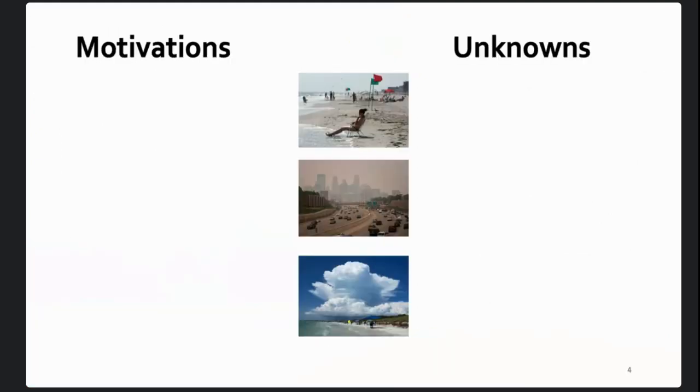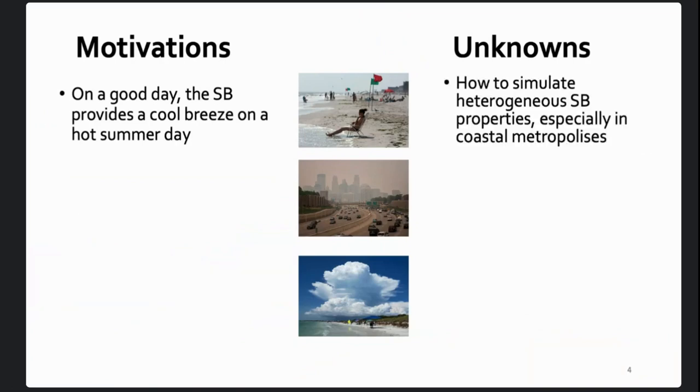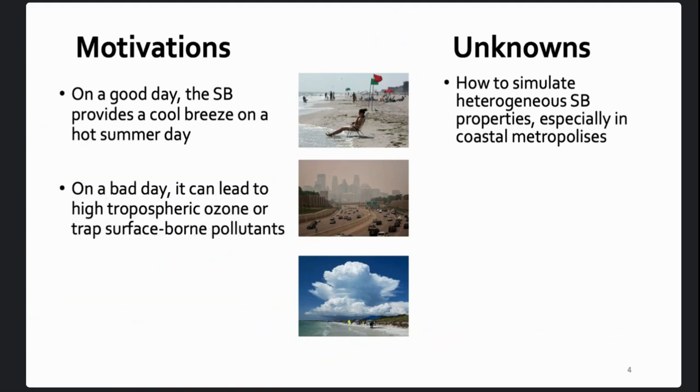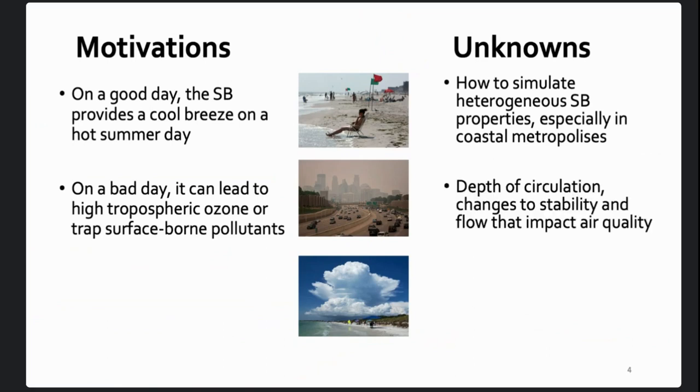So why do we care about the boundary layer? On a good day, it is really nice. It brings a nice cool breeze to a hot summer day. But how that actually impacts human comfort in coastal metropolises is not fully understood. Sometimes it can bring a lot of moisture, but not a lot of cooling, which can in turn raise the heat risk. On a bad day, it can lead to high tropospheric ozone and trapped surface-based pollutants. But that is dependent on the depth of the circulation, stability, and overall flow that we're not very good at modeling and don't fully understand exactly how to forecast it well.